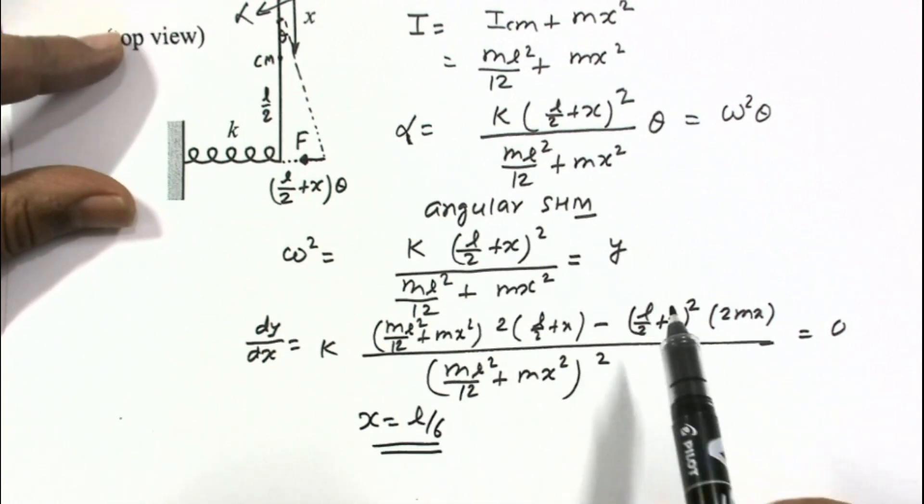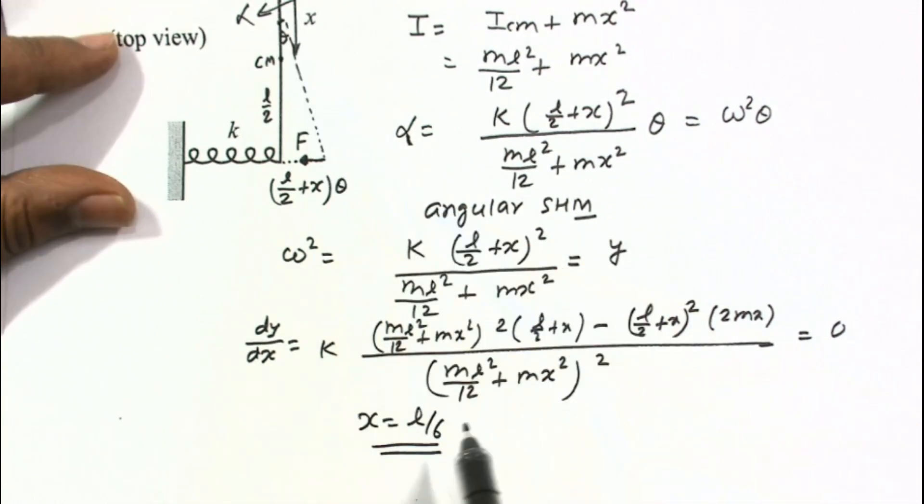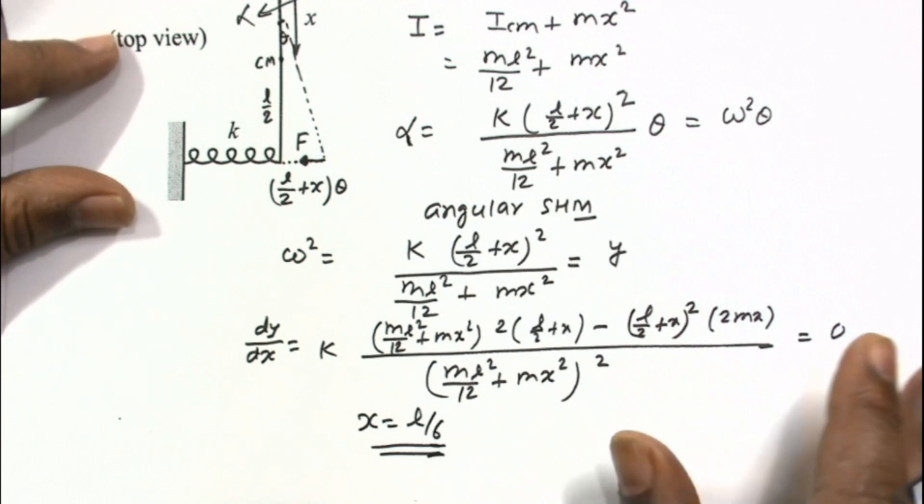So from center of mass, the hinge should be at a distance L by 6 for maximum angular frequency.